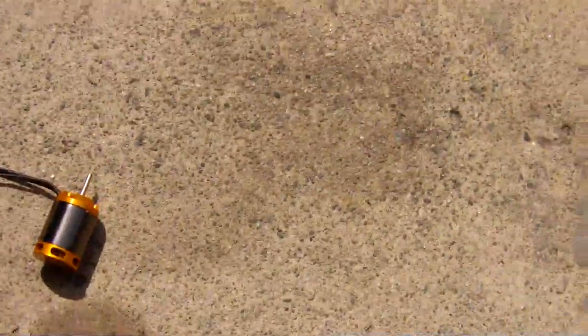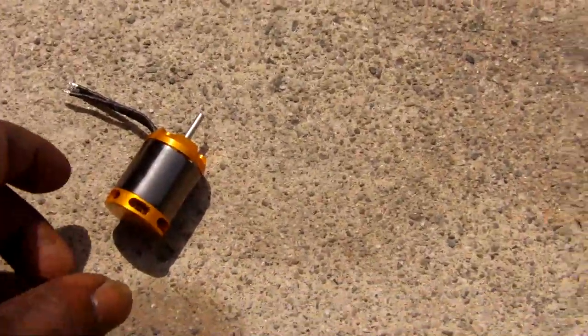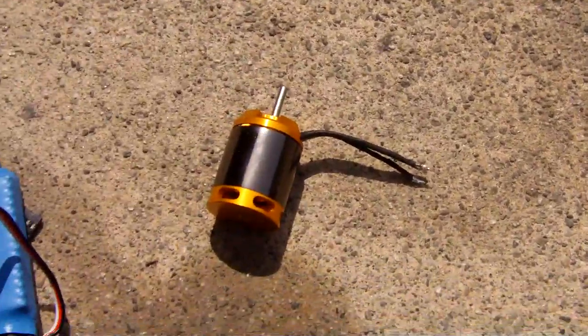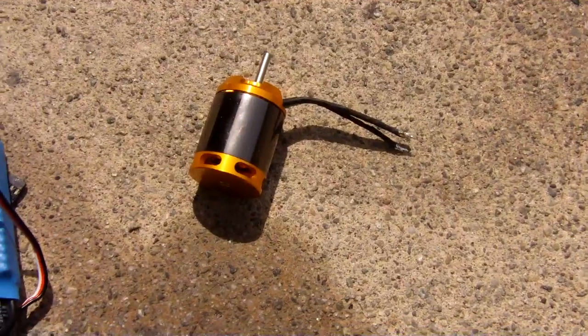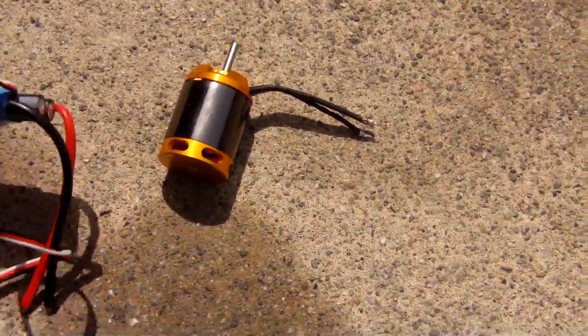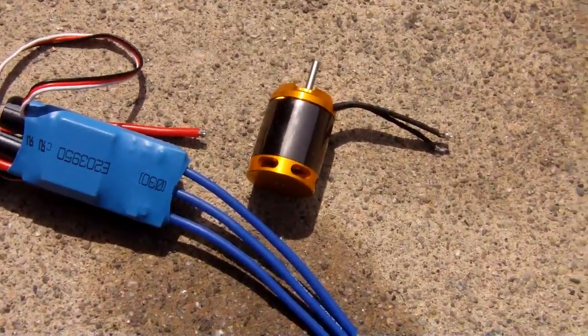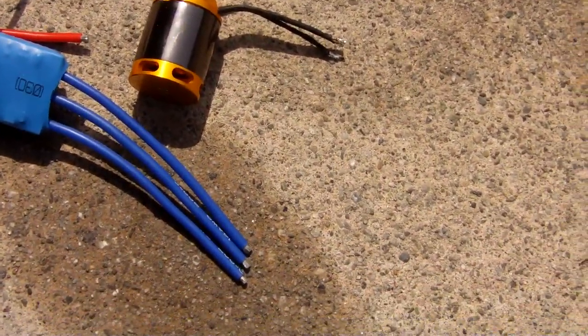Here's a Scorpion clone motor I bought on eBay for thirty dollars, 4200 kv, and a forty amp speed control. Scorpion clone motor - I didn't know that they made any motor clones of Scorpions, but we'll try it out.